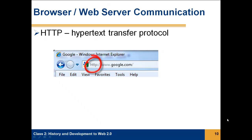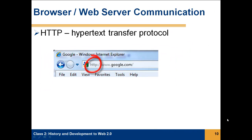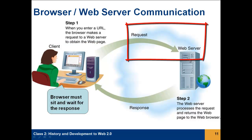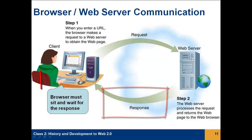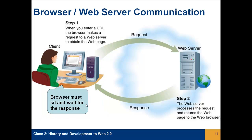The browser and the server communicate with a protocol, HTTP, which stands for Hypertext Transfer Protocol, and you see that web addresses are prefaced by this protocol. When you enter a URL in the browser, a request is made to the web server; the web server retrieves the request and sends it back to the browser. While this is going on, the browser has to sit and wait for a response, and this can be very slow. The early web was very slow — we had slow connections and less powerful computer processors, and it took a while, once you clicked on a link, for the server to send back the page.